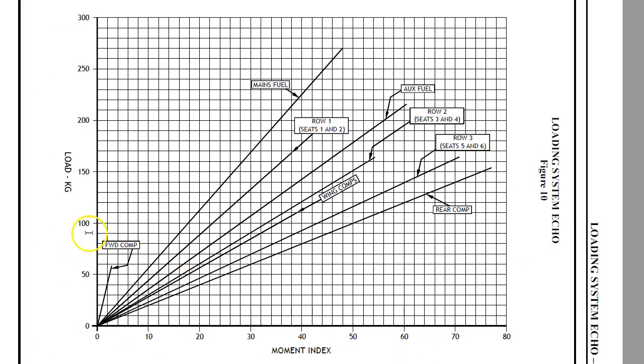And if you remember our echo chart here, when we came to it and we went to 100 kgs, look at what happened. We came across, we hit the main fuel tank, and we go down, and it's 18, good enough for 18 moment index units.